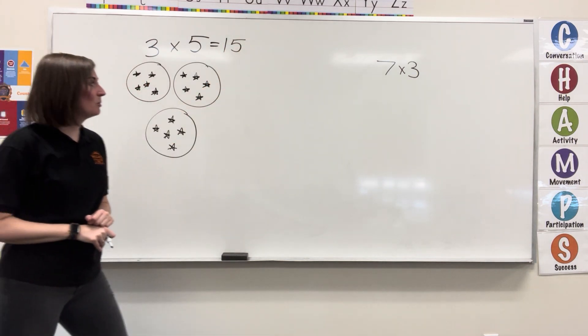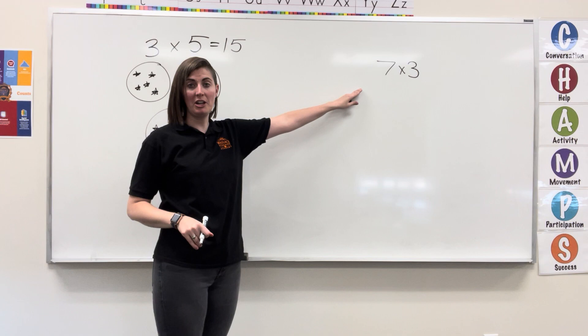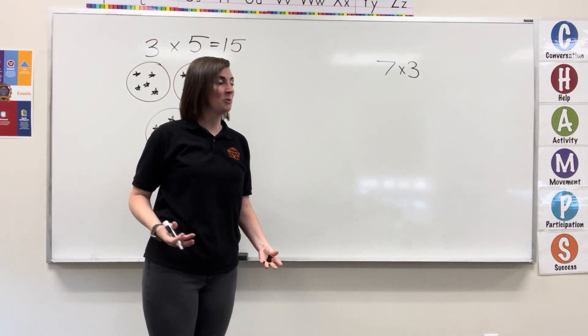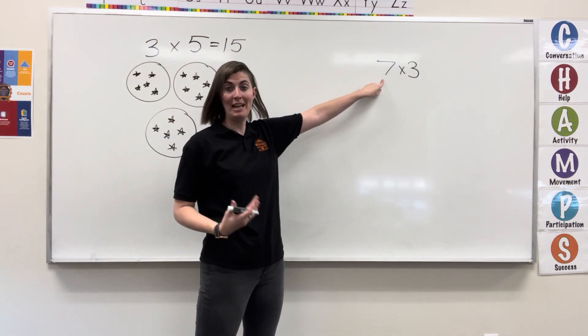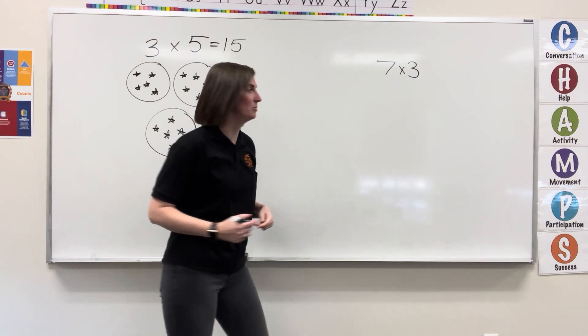Looking at our next example, we're given the multiplication expression, so we have to make the groups. My first digit tells me how many groups there are, so I'm going to make seven groups.